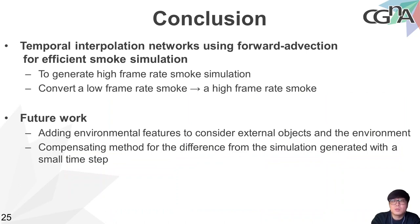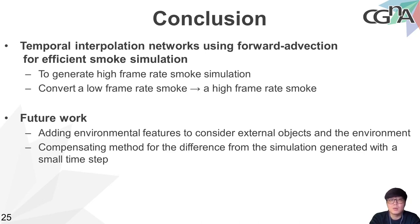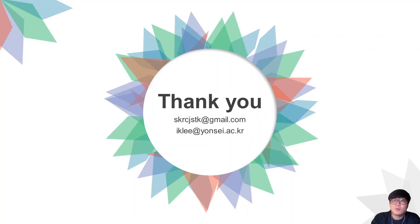We have proposed a two-stage temporal interpolation network using forward advection for efficient smoke simulation generation. The proposed method converts a low-frame-rate smoke simulation into a high-frame-rate simulation with lower computational cost than conventional methods. However, we plan to extend the method by considering environmental features for temporal interpolation, and we are also studying compensation methods for the difference from simulations generated with a small time step. Thank you very much for your attention. If you have any questions, please send emails to the provided addresses.